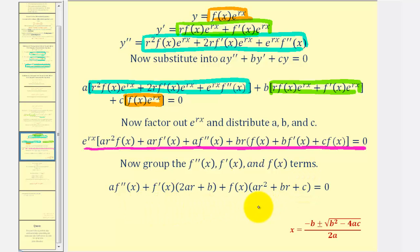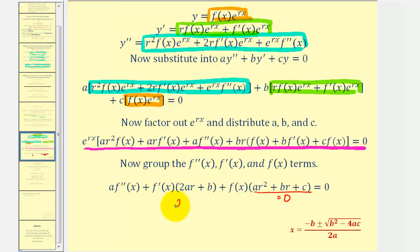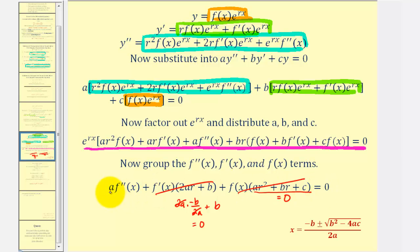Now from here we're going to group the f double prime, f prime, and f terms. There's only one f double prime term, there are two f prime terms, and there are three f terms. Now there are a couple of things we need to recognize. First, r is the solution to the characteristic equation, and this is the characteristic equation. Therefore, for this value of r, this would be equal to zero, and therefore this product drops out. And then for 2ar plus b, if we have two real equal roots, the discriminant in the quadratic formula would be zero, so r equals negative b divided by 2a. Substituting gives us two a times negative b over 2a plus b, which simplifies to negative b plus b, equal to zero. So both products are equal to zero, leaving us with a times f double prime equals zero, which means f double prime must equal zero.